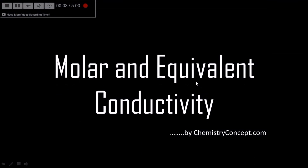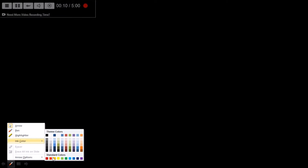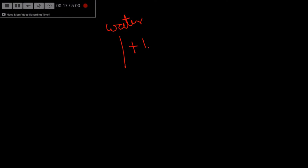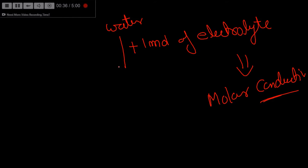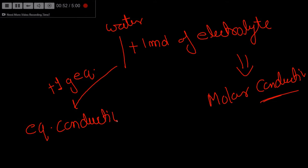Welcome to Chemistry Concept. Let's have a look at molar and equivalent conductivity. If you have some solvent like water and you dissolve one mole of an electrolyte in it, the conductivity of that solution is called molar conductivity. If you dissolve one gram equivalent of that electrolyte, then the conductivity of the resulting solution is known as equivalent conductivity.